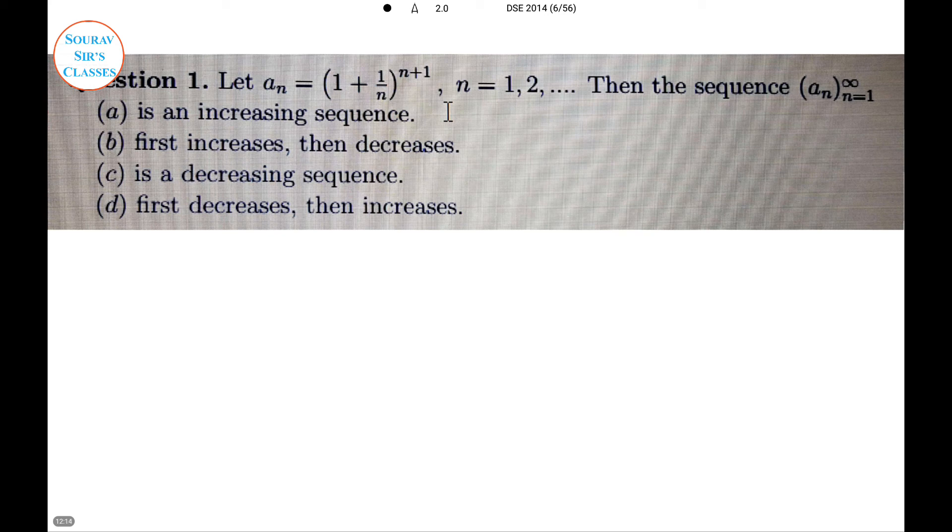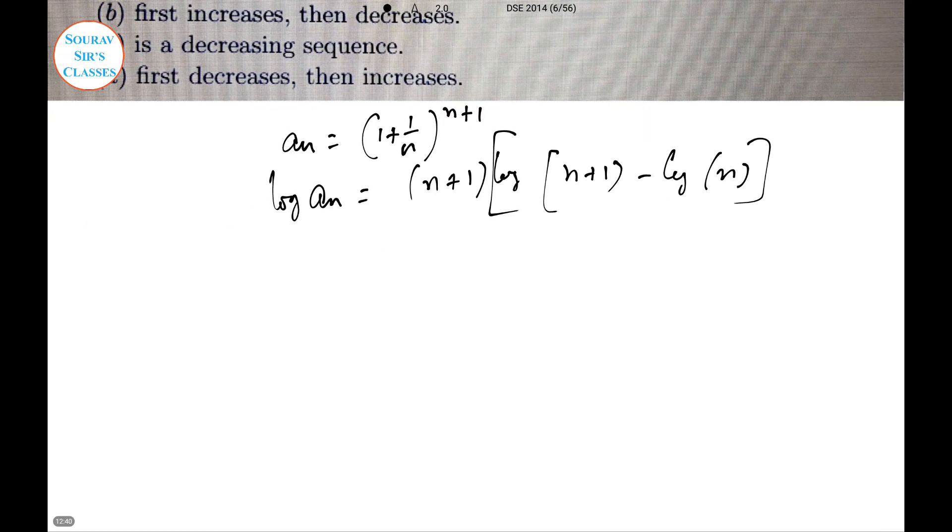We have a_n equals 1 plus 1 by n, whole to the power n plus 1. We consider it as a monotonic transformation, so we take log both sides because we have the power n plus 1. Log of a_n equals n plus 1 times log of 1 plus 1 by n. That can be written as n plus 1 log of n plus 1 minus log n. Now we have to differentiate this with respect to dn. This will be very easy: d log a_n by dn equals log of n plus 1 minus 1 by n.